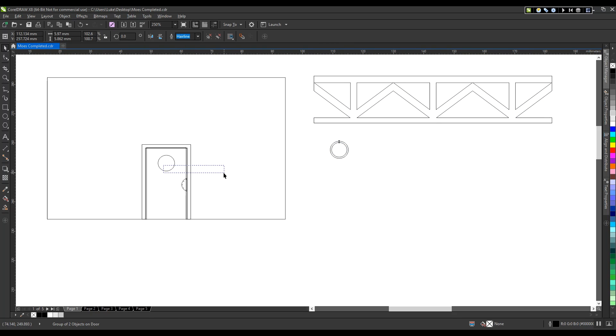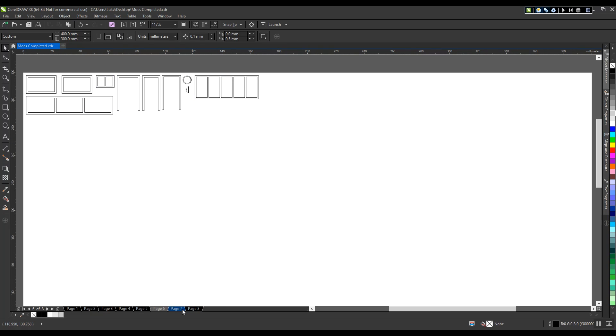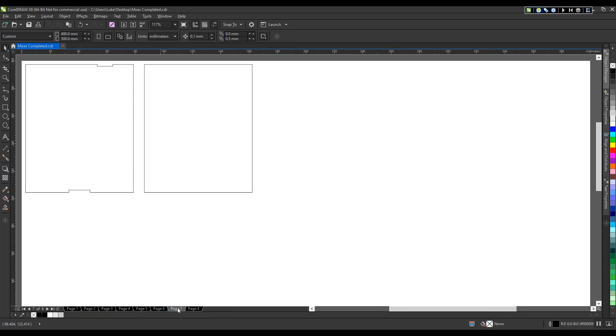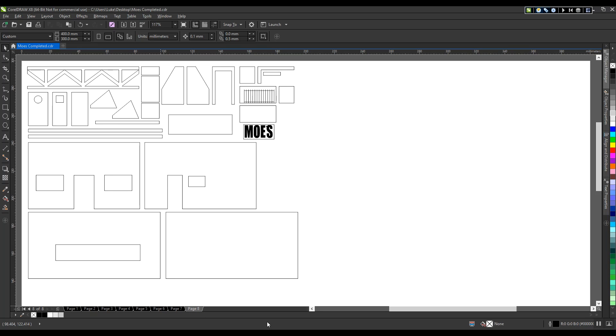Once you've finished the design, you'll need to separate all the separate components into groups depending on the material you'll be using to cut them out from. I've found that creating a separate page for each material being used is the easiest way to keep track of all the components and have them grouped appropriately.